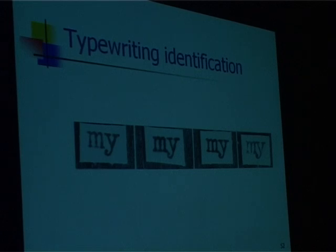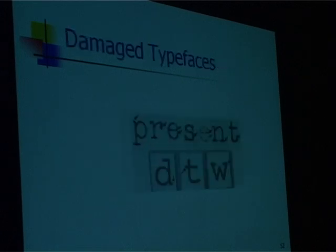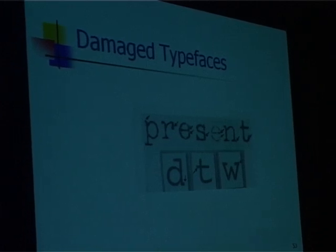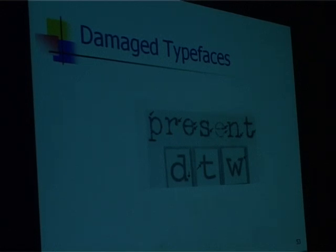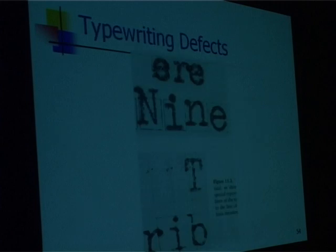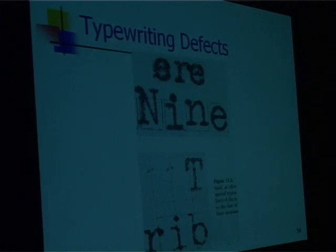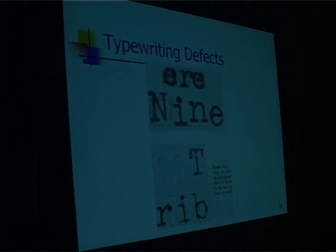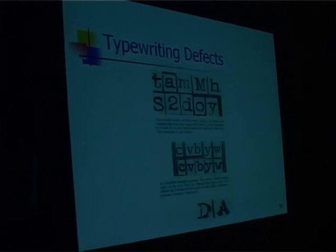Typewriting identification features include damaged typefaces, which come to the rescue of the examiner. Brand new typefaces cannot be exploited by the expert to prove or disprove the origin of the typewriting. But when the typewriter's typefaces get worn and torn, there are definitely more opportunities. Another feature is the vertical twist on letters — normally all characters are perpendicular, but the twisting of typefaces causes the angle of vertical strokes to change.